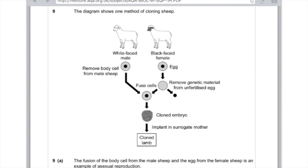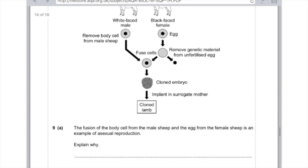Remember they fuse by electricity and get replanted into a surrogate. 9a: The fusion of the body cell from the male sheep and the egg from the female sheep is an example of asexual reproduction. Explain why. First of all, you can say here that there is no mixing of the genetic material, and second, it's because the nucleus was removed from the egg cell before fusion. That's all you need to write.